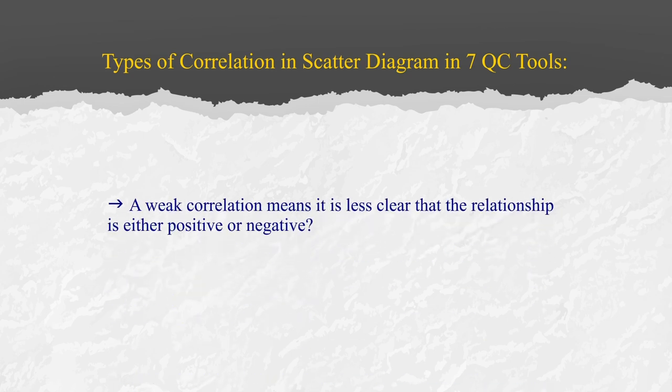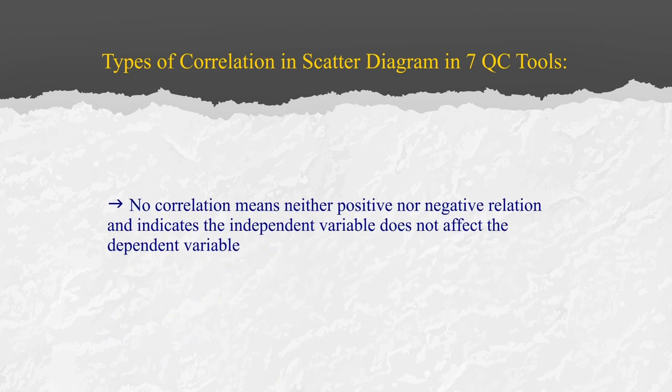A weak correlation means it is less clear that the relationship is neither clearly positive nor negative. No correlation means there is neither a positive nor negative relationship, and it indicates the independent variable does not affect the dependent variable. The scatter diagram is quite useful because it shows the relationship between two variables in a process and determines how closely the two variables are related. By looking at the scatter diagram, we know what kind of relationship exists — whether positive, negative, or no relationship.